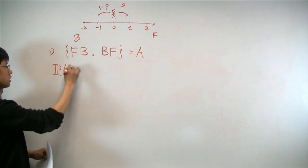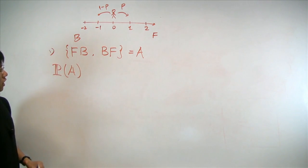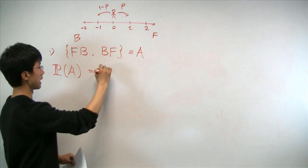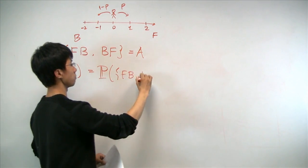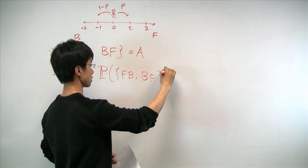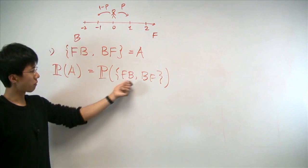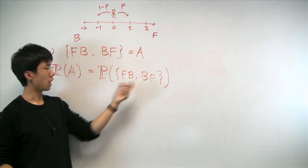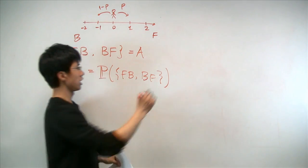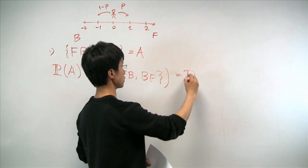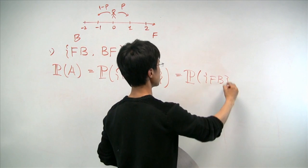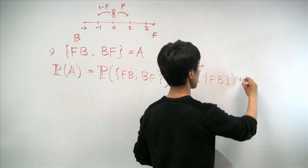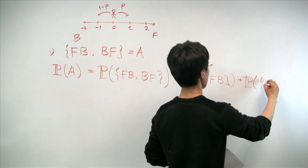And we'd like to know what's the probability of A, which we'll break down into the probability of forward-backward plus backward-forward. Now, forward-backward and backward-forward, they're two completely different outcomes. And we know that because they're disjoint, this will just be the sum of the two probabilities, plus probability of backward-forward.